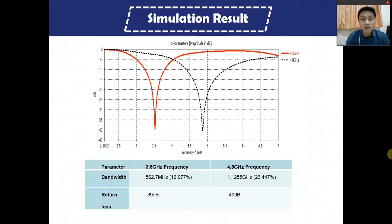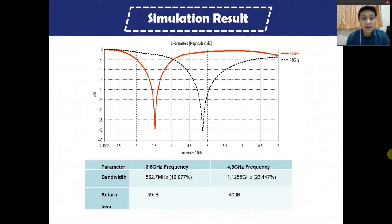The bandwidth of my antenna is 562.7 MHz for 3.5 GHz and 1.1255 GHz for 4.8 GHz. The total bandwidth of both frequencies combined is actually wideband. An antenna is considered a wideband antenna if it has more than 1 GHz of bandwidth, and my antenna qualifies — which is good for 5G implementation.